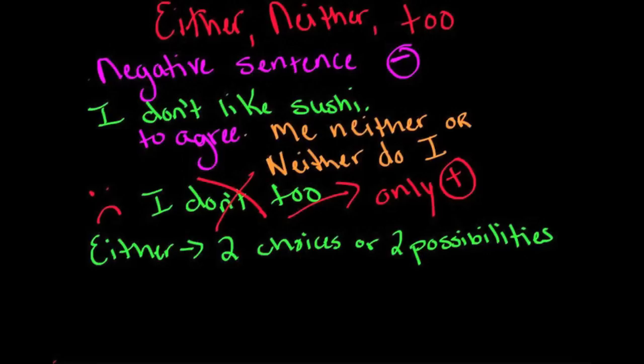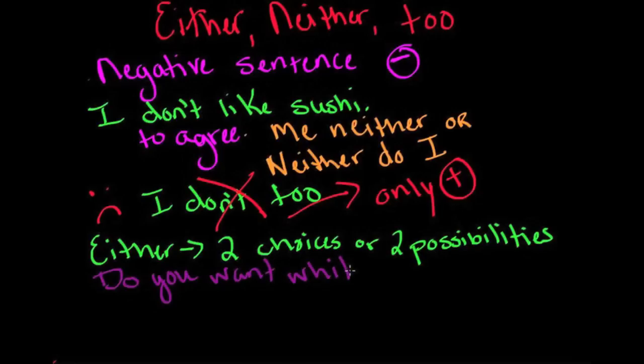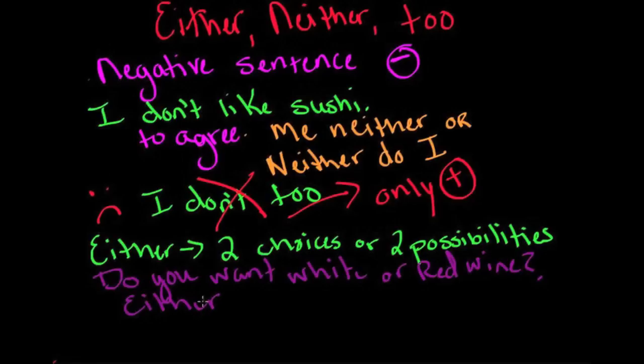Two choices or two possibilities. For example, do you want white or red wine? And we say either. Either white or red. And I say either, which means that both white and red are acceptable to me.